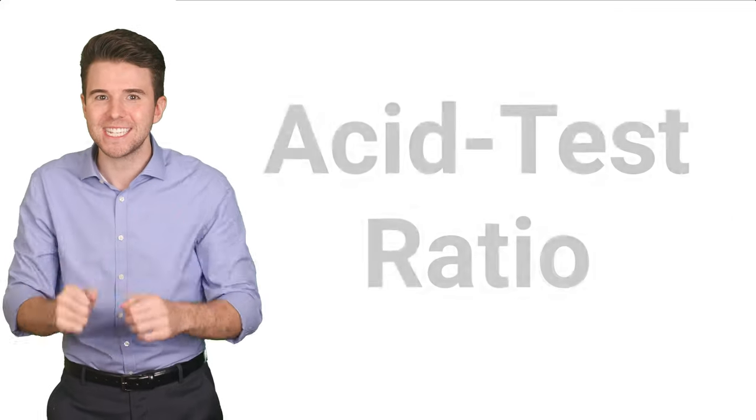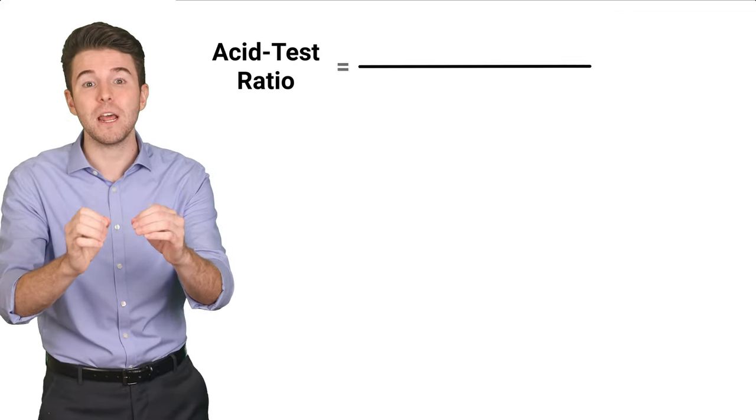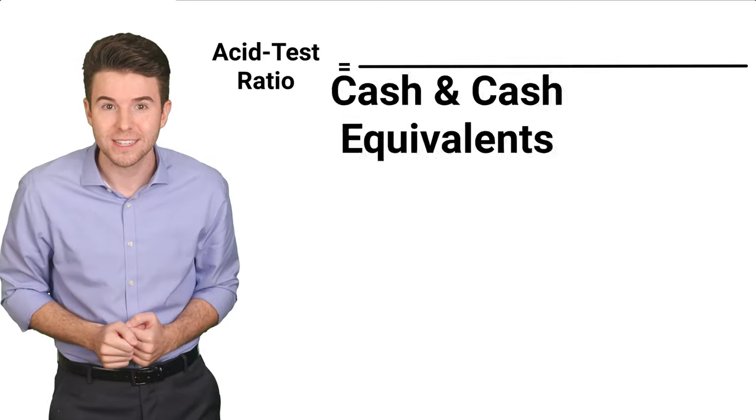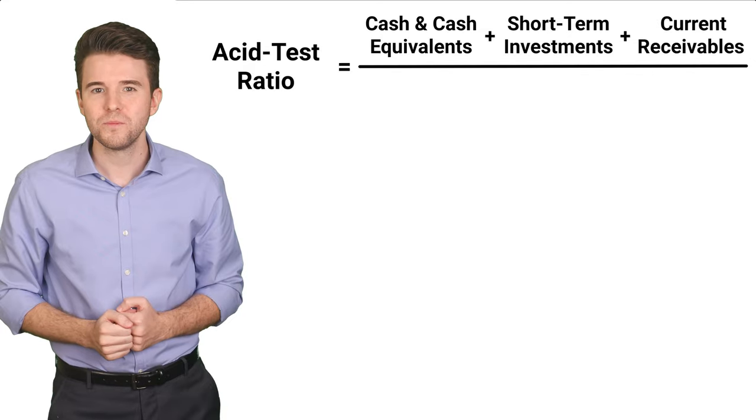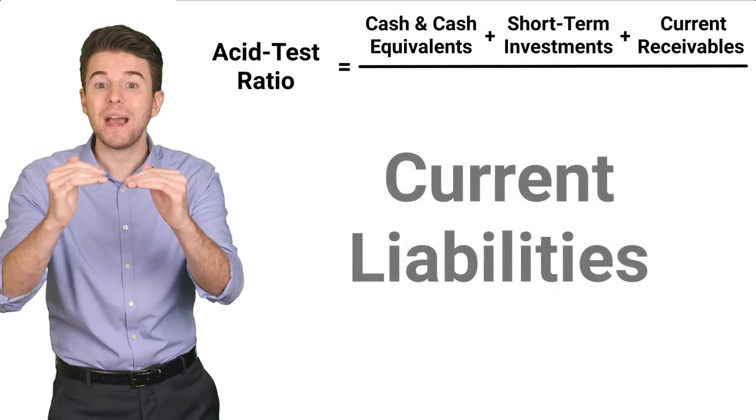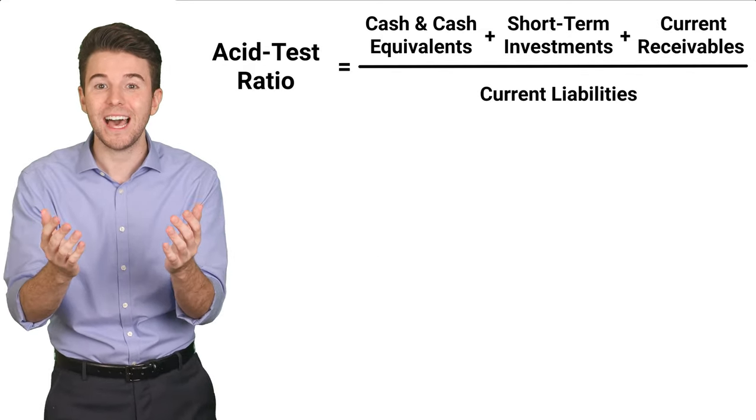To calculate the acid test ratio, you'll need to add up the company's cash and cash equivalents, short-term investments, and current receivables, and then divide that amount by the company's current liabilities.